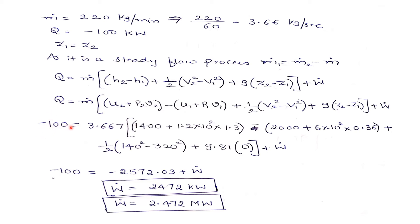Q is minus 100, mass flow rate is 3.667 kg/s. U2 is 1400 plus pressure given in bar converted to kilopascals times specific volume, minus U1 value, 6 bar converted to kilopascal times specific volume, plus 1/2(V2² minus V1²) plus 9.81 times zero, plus W dot.